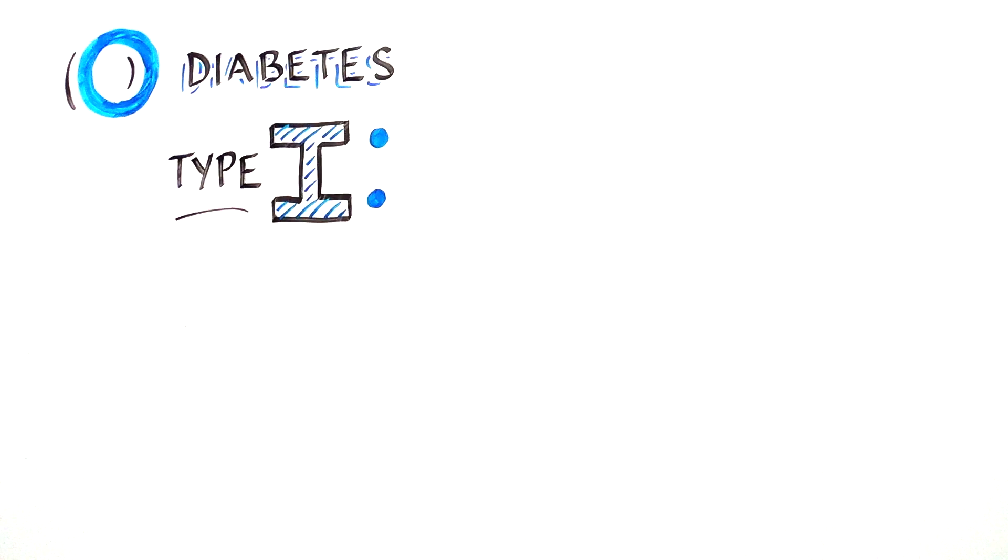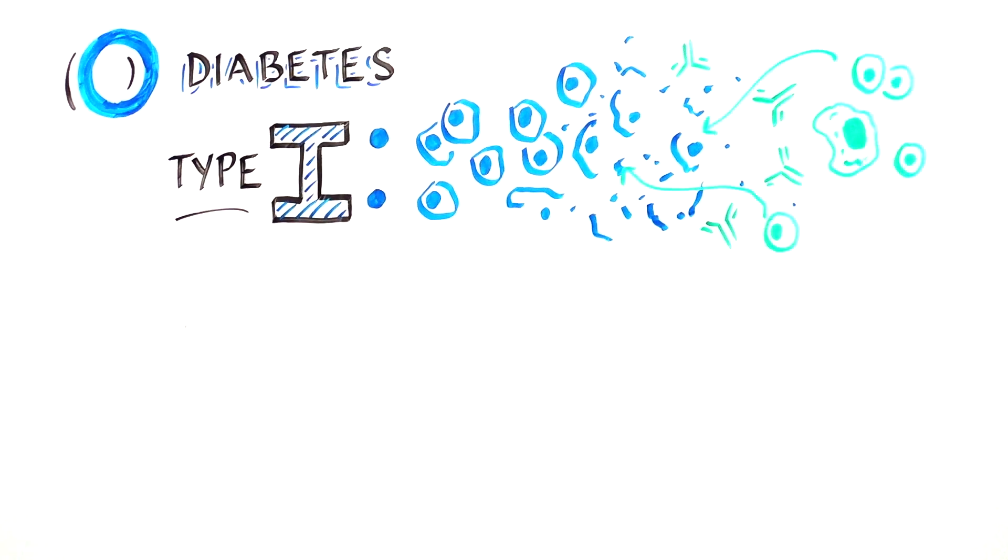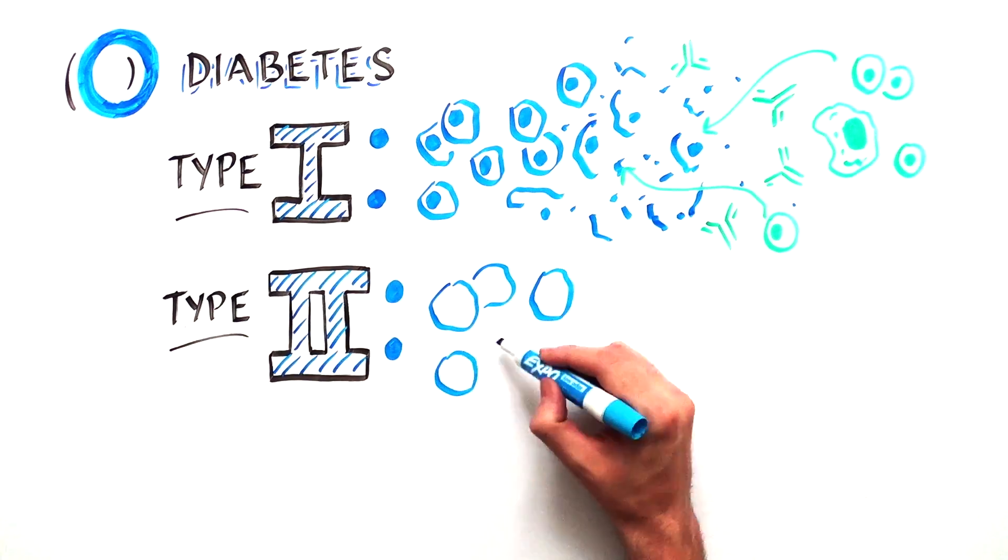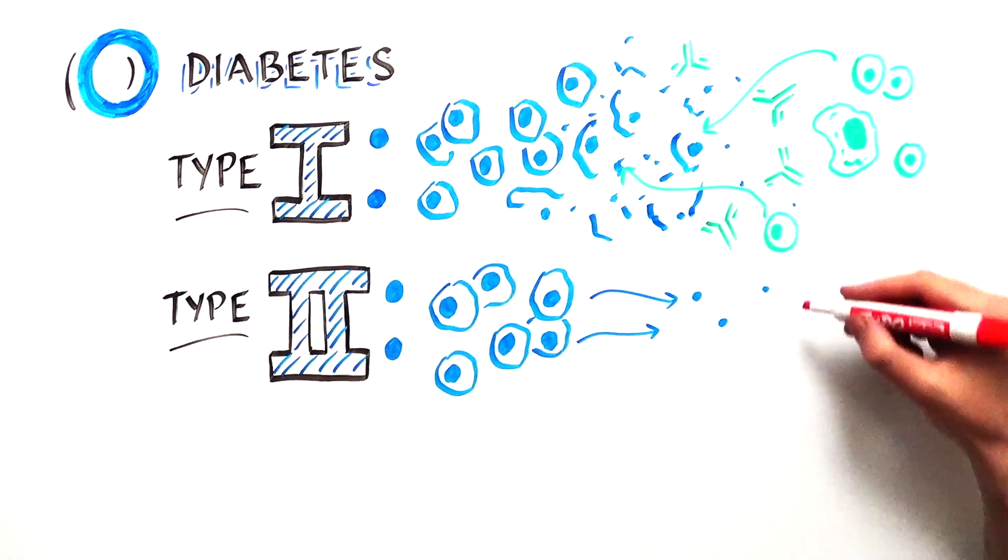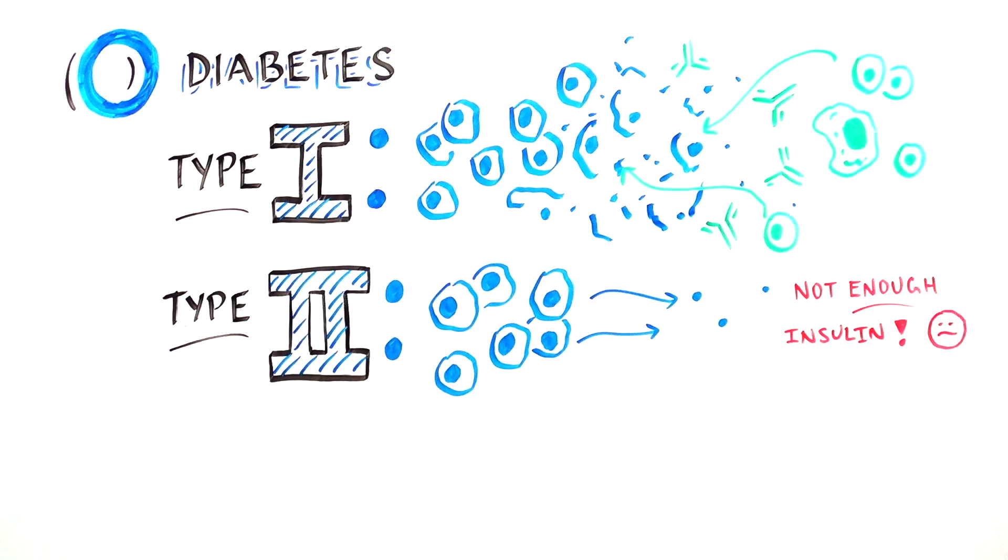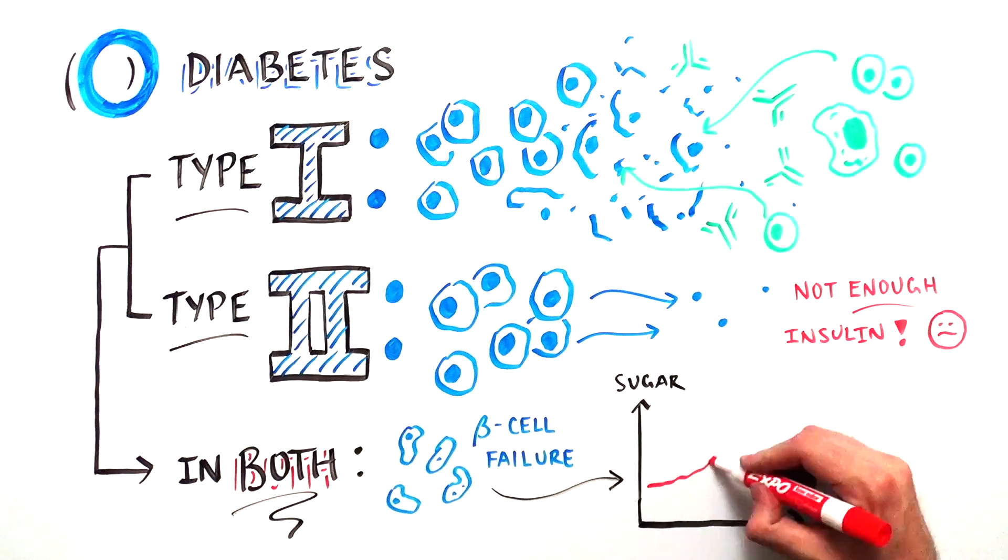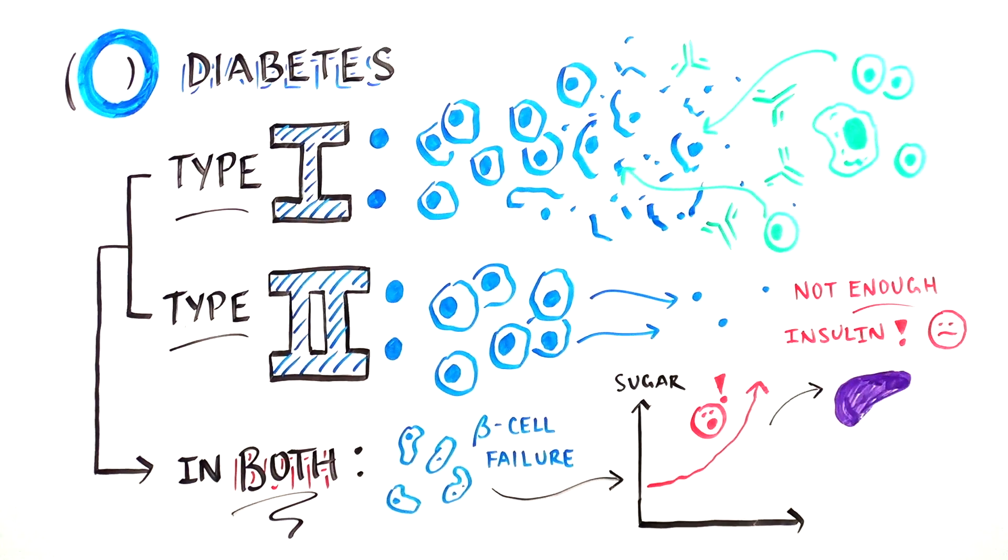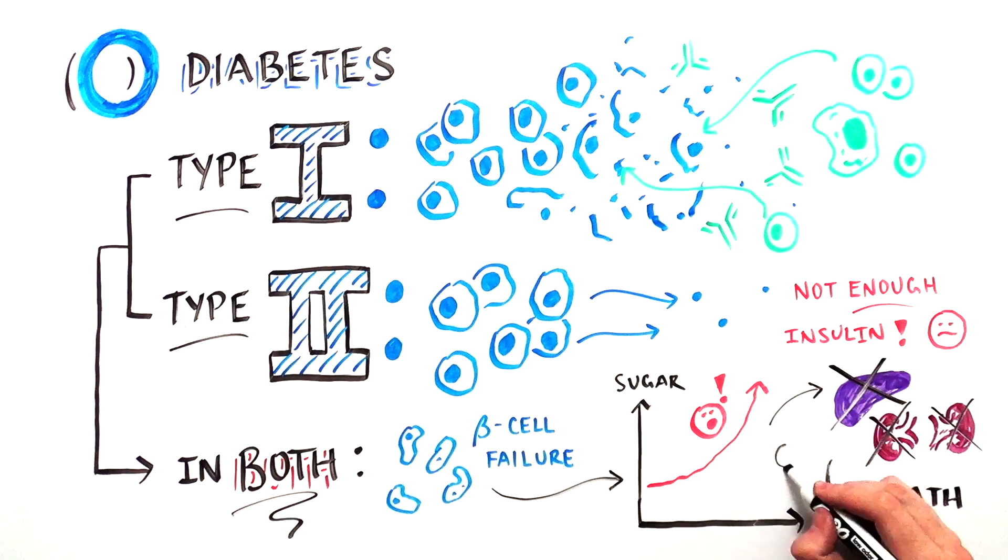In type 1 diabetes, beta cells are destroyed by the body's immune system. In type 2 diabetes, beta cells become dysfunctional and cannot produce enough insulin. In both cases, the loss of functional beta cells lead to elevations in blood sugar levels that damages organs and, if untreated, can lead to death.